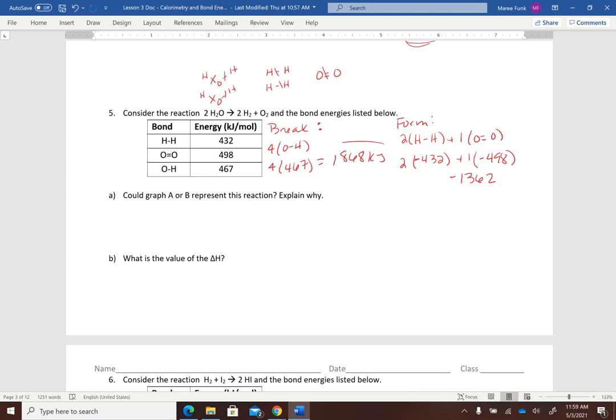When we compare these two numbers, we can see that this 1868 is a bigger number than 1362. So we are putting more energy in. So graph A would describe this reaction because this is an endothermic reaction. Because we are having to put more energy in, this requires more energy to break the bonds in the reactants than we get out when we form the products. So that is how you should explain this.